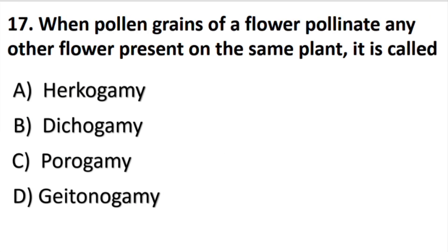When pollen grains of a flower pollinate any other flower present on the same plant, it is called geitonogamy.